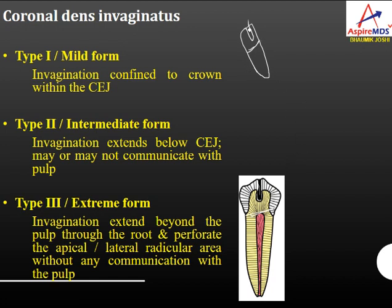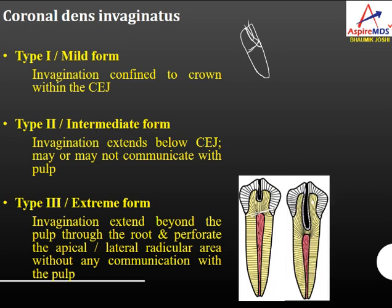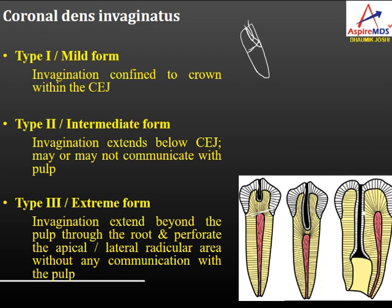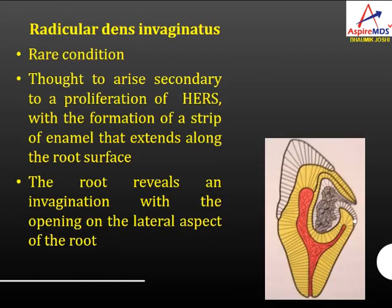In type 2, the invagination extends below the CEJ and may or may not communicate with the pulp. Type 3 is the extreme form where invagination extends beyond the pulp through the root and perforates the apical radicular area without communication with the pulp, directly perforating into the periapical area. Radicular dens invaginatus arises secondary to proliferation of Hertwig's epithelial root sheath, forming a strip of enamel that extends along the root surface, with the root revealing an invagination opening on the lateral aspect.